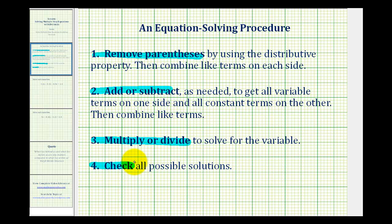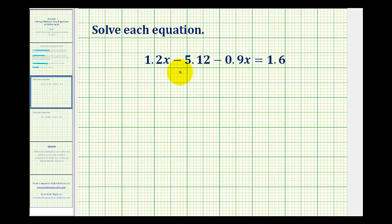Let's take a look at our first example. Notice there aren't parentheses for us to eliminate, but there are two like terms on the same side of the equal sign. Here we have 1.2x minus 0.9x, well 1.2 minus 0.9 would be 0.3, so this simplifies to 0.3x minus 5.12 equals 1.6.